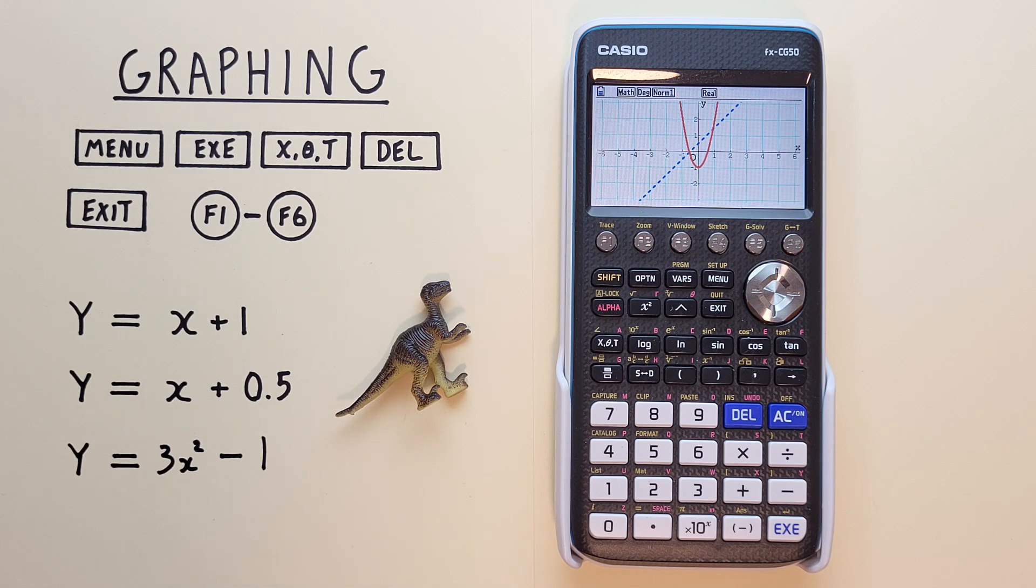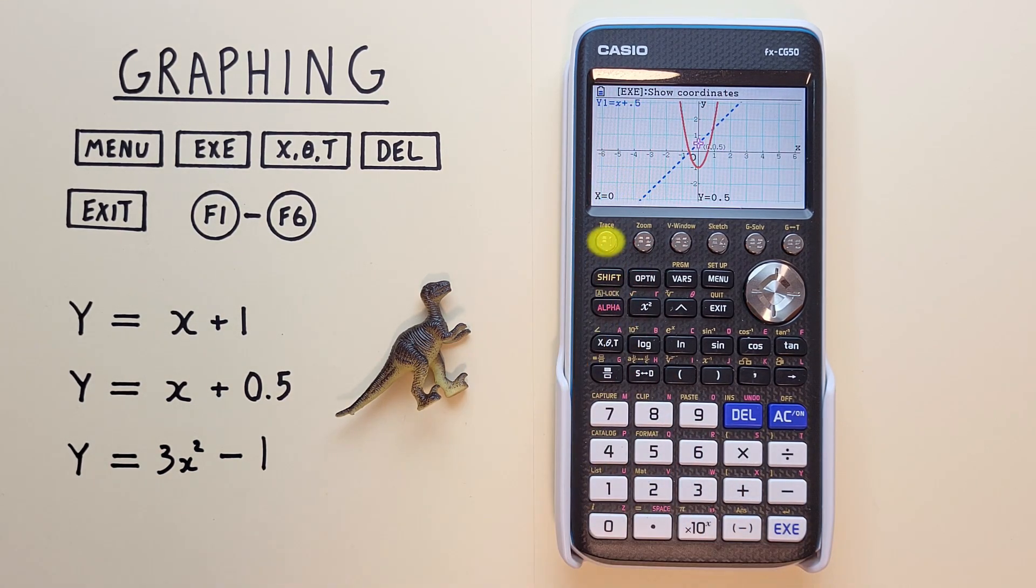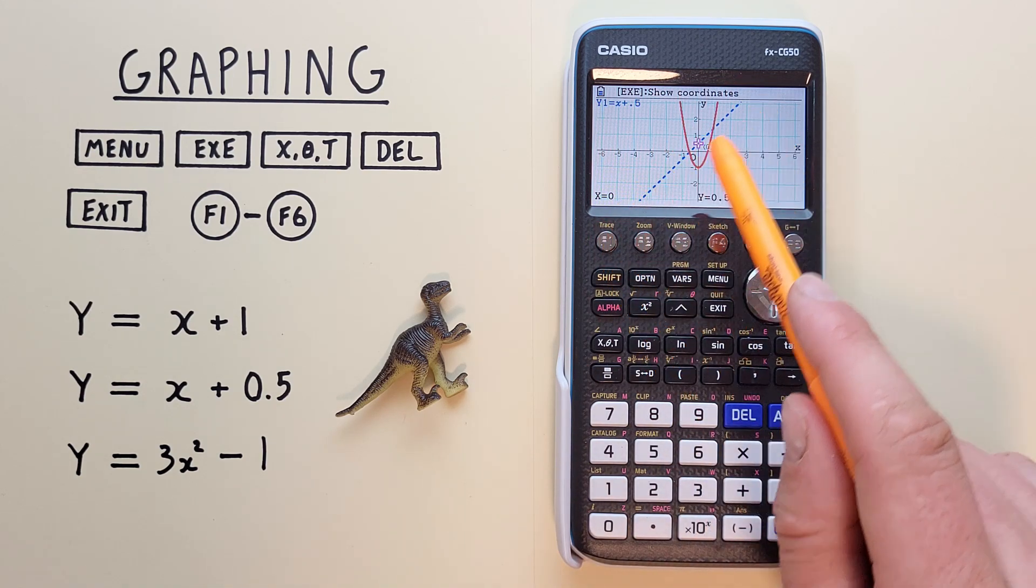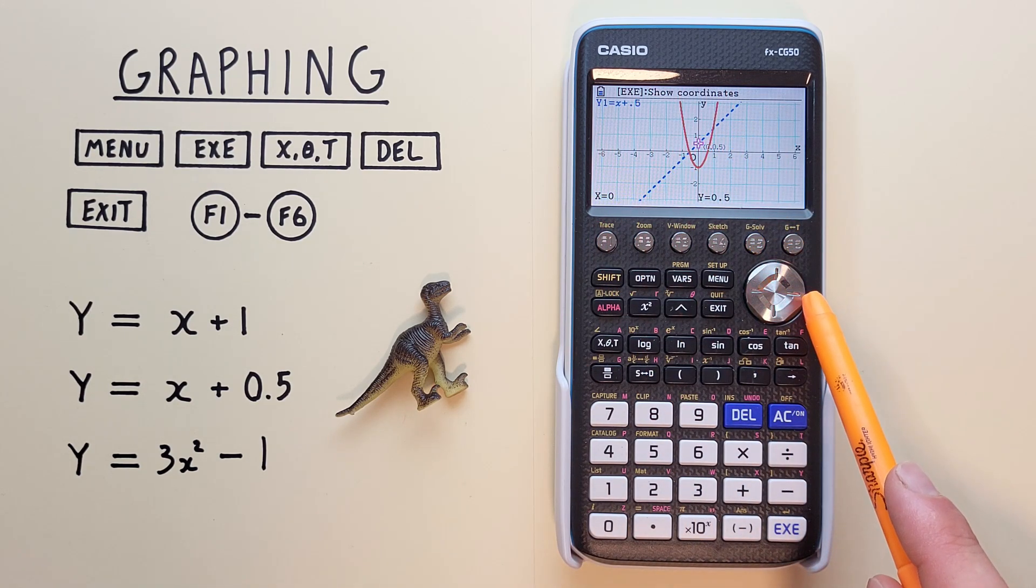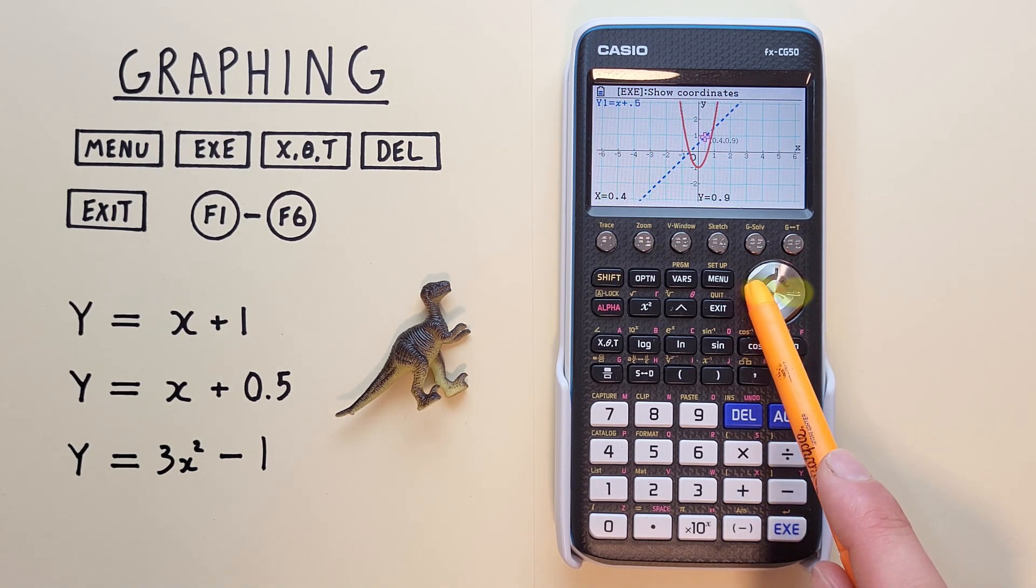We can use the Trace function to find specific values of X and Y on our functions. Let's do that. We press Shift, and then F1 Trace. Now we see the cursor on our Y1 function, and we can scroll left and right to move along the line.